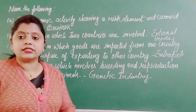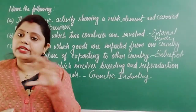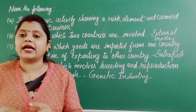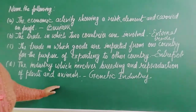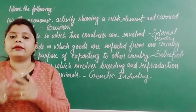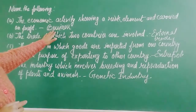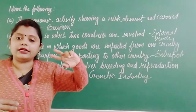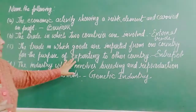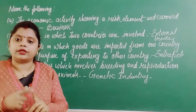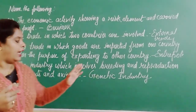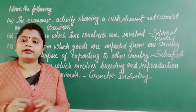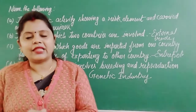Whenever such questions are given, my suggestion is to read the statement, compare it with the options, and then conclude what is being asked. In this question we saw four different situations: the first was related to business, where the word 'profit' gave us the answer. The second was trade — two countries means external trade. The third had import and export going on simultaneously, so it is entrepot trade. The last was related to breeding and reproduction, so it is genetic industry. Thank you so much, have a nice day.